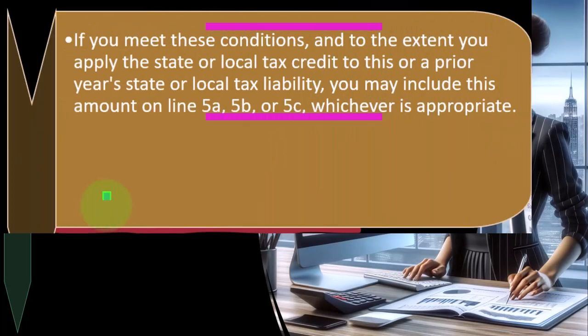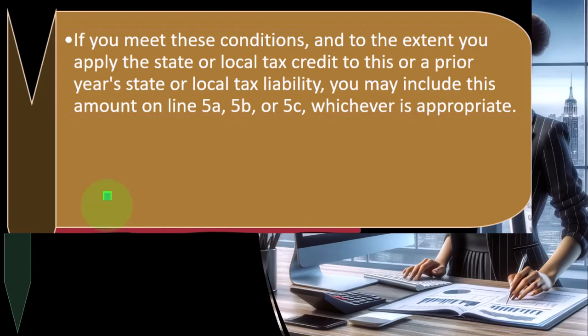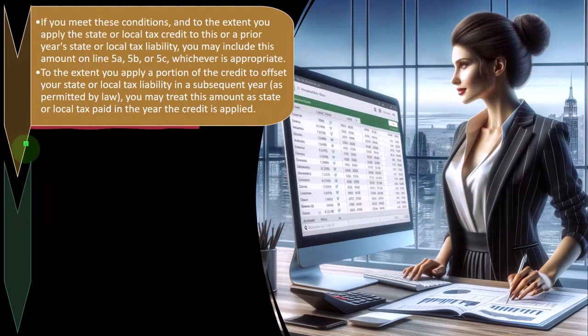If you meet these conditions, and to the extent you apply the state or local tax credit to this or a prior year's state or local tax liability, you may include this amount on line 5A, 5B, or 5C, whichever is appropriate. To the extent you apply a portion of the credit to offset your state or local tax liability in a subsequent year as permitted by law, you may treat this amount as state or local tax paid in the year the credit is applied.